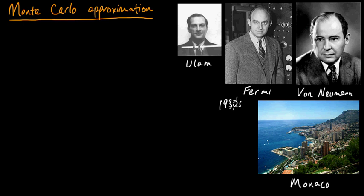In the mid-1940s, von Neumann, Fermi, and Ulam — Stan Ulam, shown here — were all at Los Alamos working on the bomb. Von Neumann had his computers, Fermi was there doing physics, and they were working on the bomb in the 1940s. Of course, the atomic bomb was a terrible technology, resulting in the deaths of many people in Japan, which was very unfortunate.